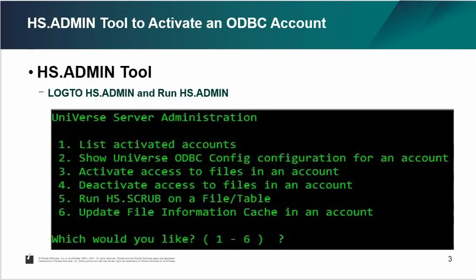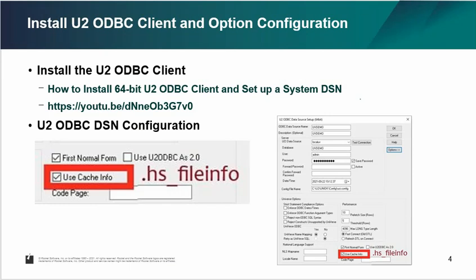When working with the ODBC client, the HS.MN tool will show you which accounts are already activated. You can activate, deactivate, and also update the file information cache in your account. First, you need to find the U2 32-bit or 64-bit ODBC driver. For this demo, I will only use the 64-bit U2 ODBC client. You can also see my other video on how to install and set it up.